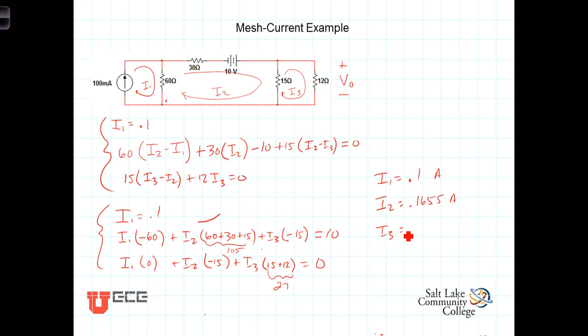But we weren't asked to determine what the currents were, we were asked to find what V_out is. So now we can say that V_out is equal to 12 times the current flowing through that, which is our mesh current i3. So 12 times i3, and that's going to be 12 times 0.092, and that equals 1.104 volts.